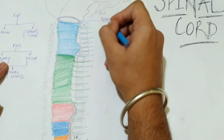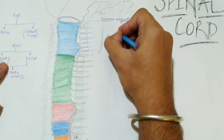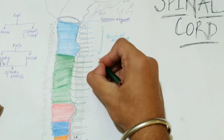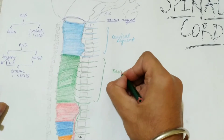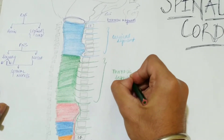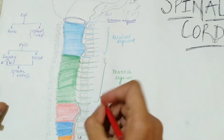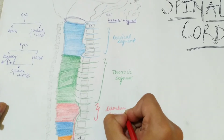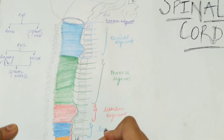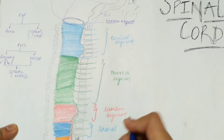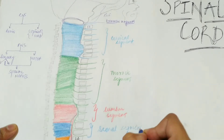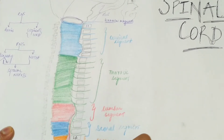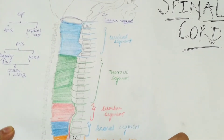Let's mark the segments. This region is your cervical segment. The green one is your thoracic segment. The red one is your lumbar segment. The dark blue one is your sacral segment. And the orange one is your coccyx segment.